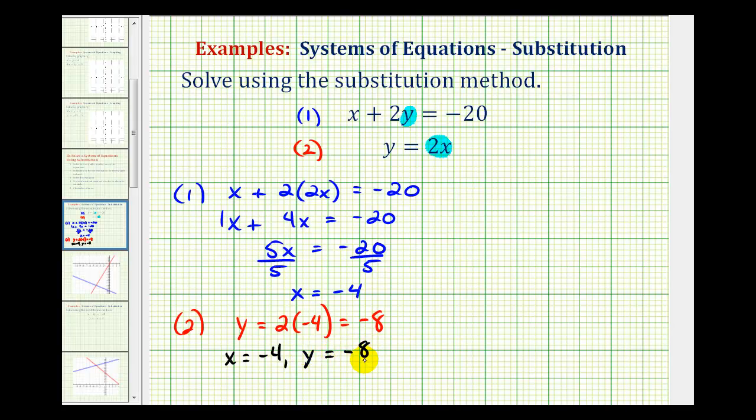This can be expressed as an ordered pair, where the first coordinate would be negative four, and the second coordinate would be negative eight.